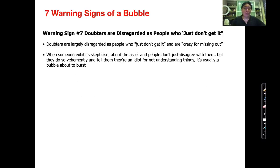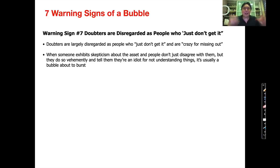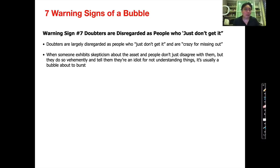Warning sign number seven: when doubters and skeptics are disregarded as people who just don't get it and who are crazy for missing out on great things that are going to change the world and make everybody rich. It really amazes me that every time I talk about things like Tesla being overvalued or Bitcoin being a bit of a bubble, people get really upset. Not only do they disagree with me, they call me an idiot and say I don't know what I'm doing. And that's a bit of a sign.